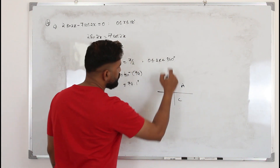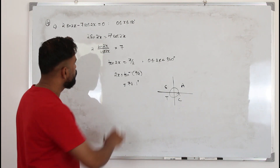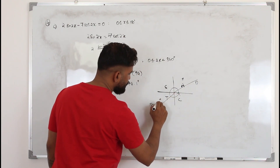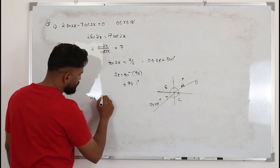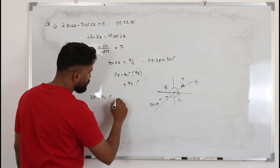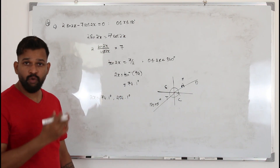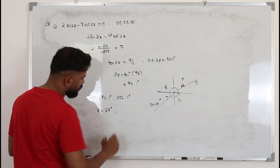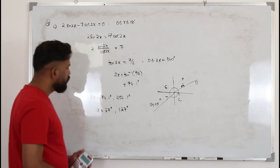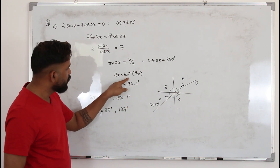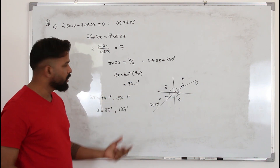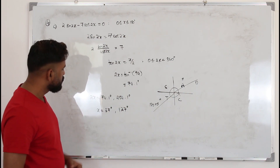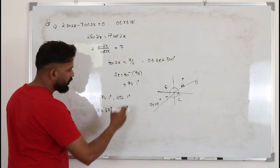Draw the ASTC diagram. The new limit is 0 to 360° and tan is positive in the first and third quadrants: θ and 180° + θ. So 2x = 74.1° and 2x = 180° + 74.1° = 254.1°. Divide everything by 2 at the end. Use the unrounded value 74.05° before dividing, giving x ≈ 37.0° and x ≈ 127°.